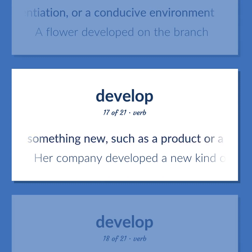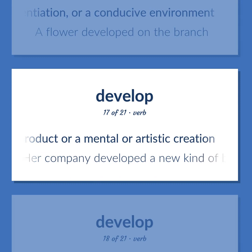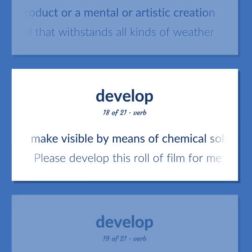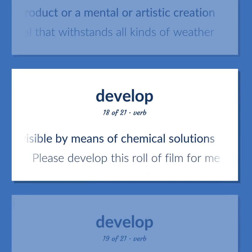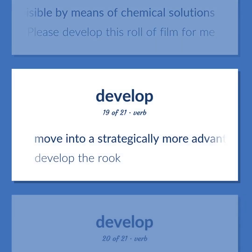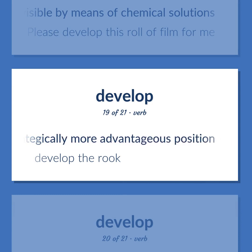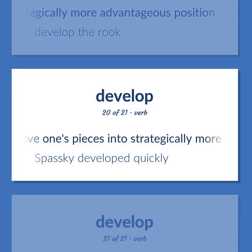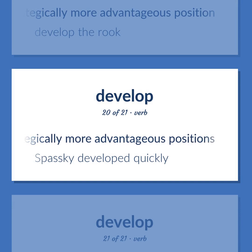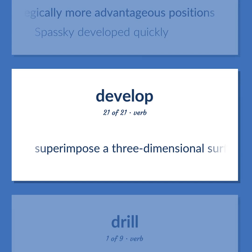Make something new, such as a product or a mental or artistic creation. Her company developed a new kind of building material that withstands all kinds of weather. Make visible by means of chemical solutions. Please develop this roll of film for me. Move into a strategically more advantageous position. Develop the rook. Move one's pieces into strategically more advantageous positions. Spassky developed quickly.